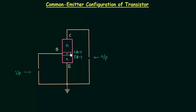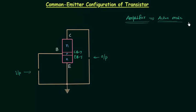We want to use this transistor as an amplifier, and in order to amplify the input signal the transistor must operate in active mode. In active mode of operation, the collector-base junction is reverse biased and the emitter-base junction is forward biased.